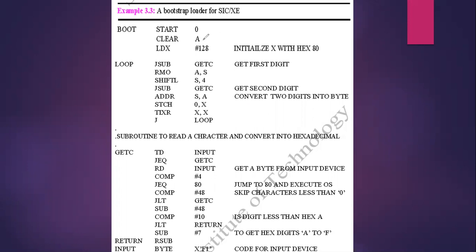Now we need to read content from the hard disk and place it at location 80. The logic is: read two characters from the hard disk, add them together, make it a single value, and store that single value at 80. Then the index register is incremented to point to 81, and the same procedure repeats. After loading the index register with 80, we have a jump to subroutine getc to get the first digit. Then we go to the subroutine to read the character and convert it into hexadecimal.